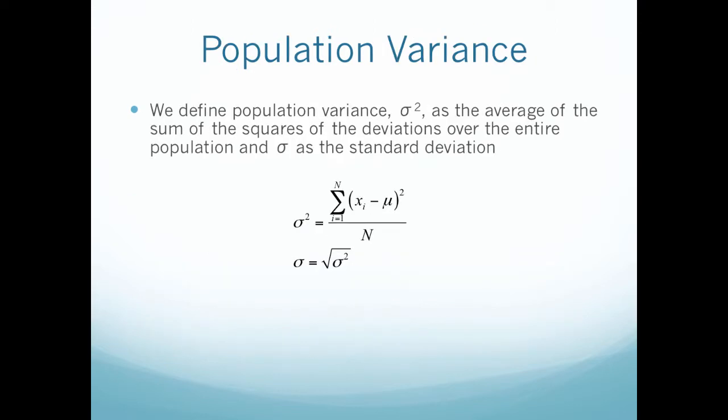We define population variance, sigma squared, as the average of the sum of the squares of the deviations over the entire population and sigma as the standard deviation. The formula for this would be sigma squared equals the sum from i equals 1 to n of x sub i minus mu quantity squared all divided by n. We would then find the standard deviation by taking the square root of the variance.